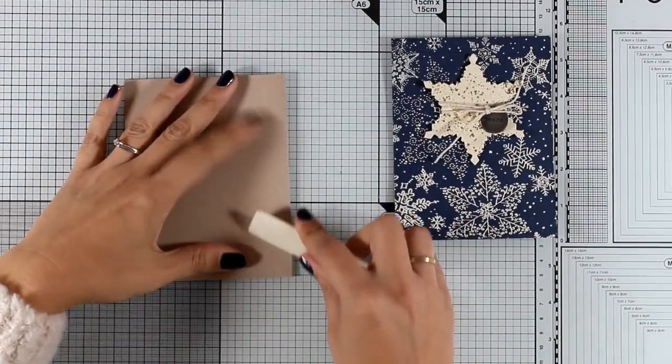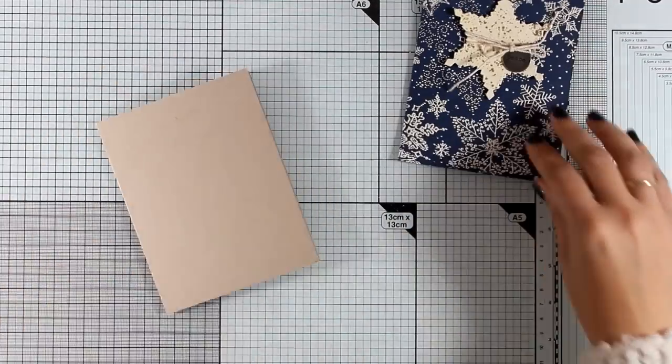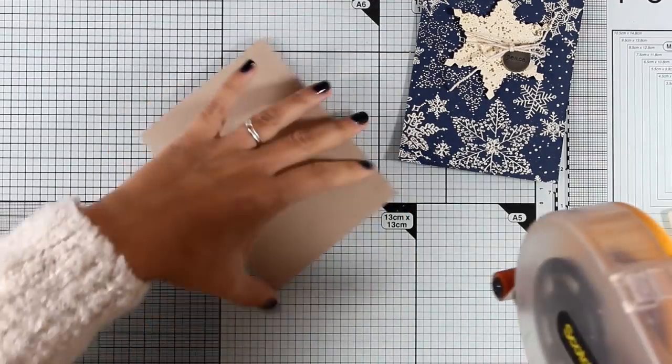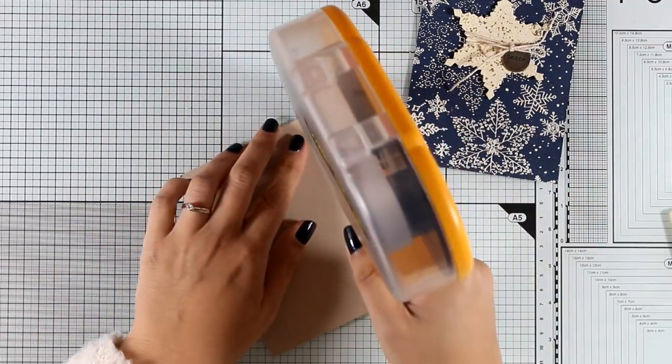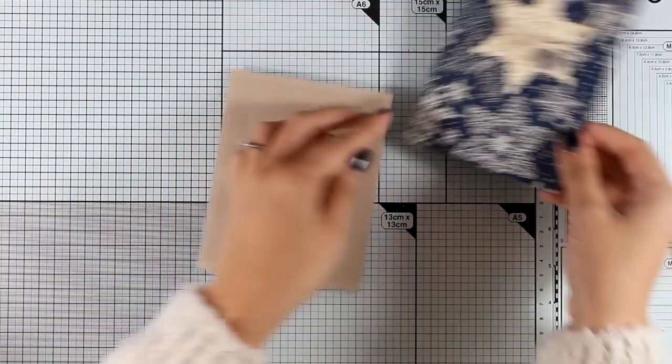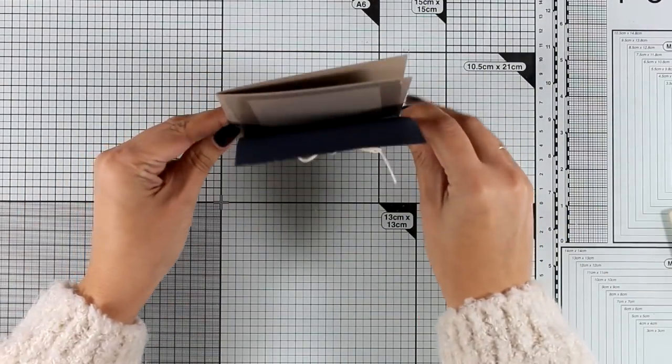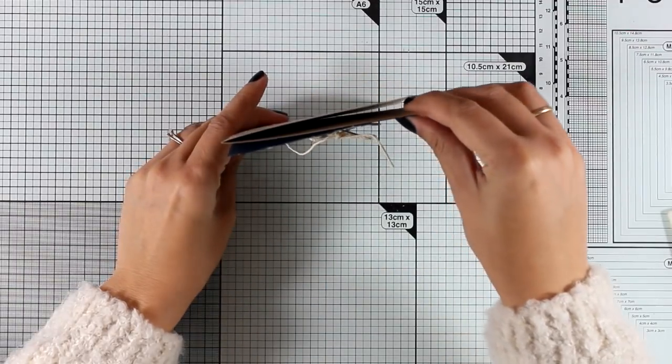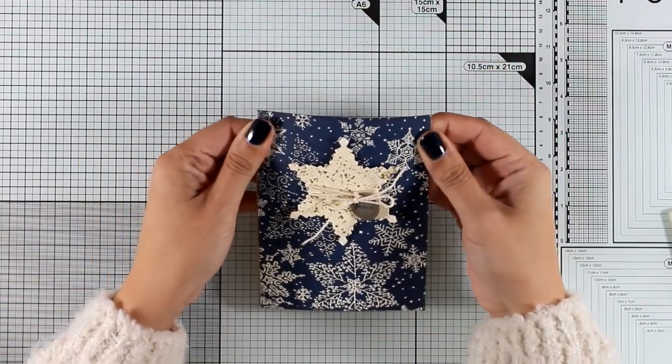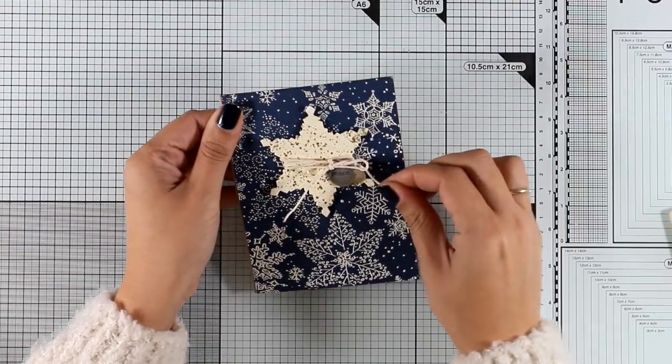And I decided to go with a craft colored card base just to match the string and the muted colors on my card. Now I'm going to add some strong tape adhesive to stick that panel on top. And if you notice, today I cut my panel the same size as the standard card, so I don't have a border around it, but for this card it works out for me.